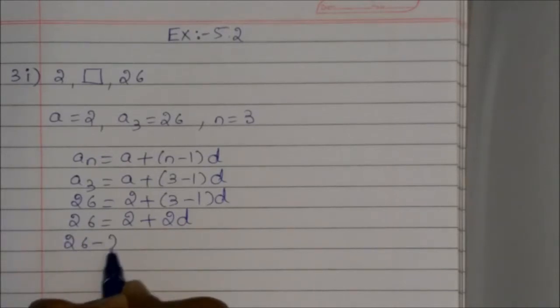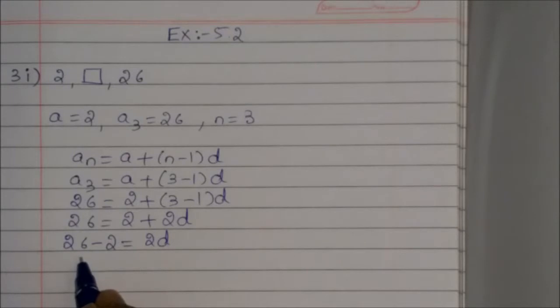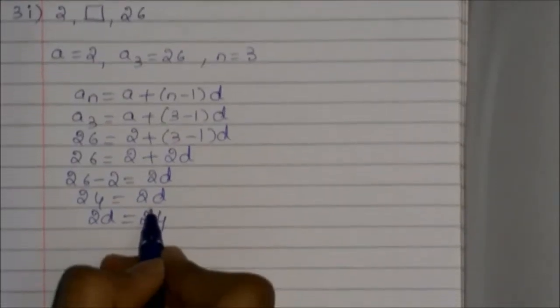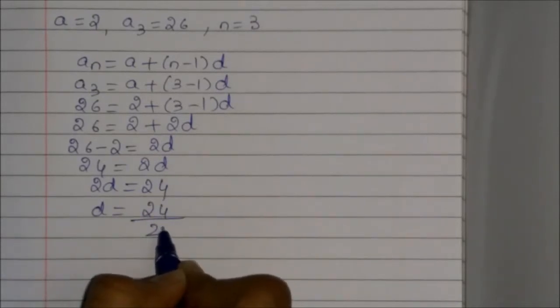26 minus 2 equals 2d. 24 equals 2d. So 2d equals 24. Therefore, d equals 24 divided by 2.